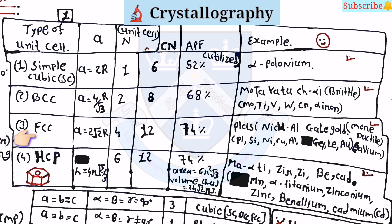The third structure is FCC (face-centered cubic). For this, A is equal to 2 root 2 times R, n is equal to 4, CN is equal to 12, and APF is equal to 74%. The examples are platinum, silicon, nickel, copper, aluminium, gallium, lithium, and gold (Au).